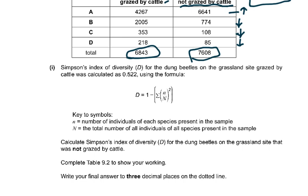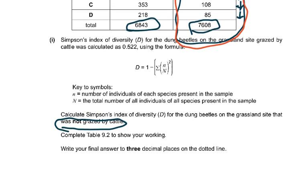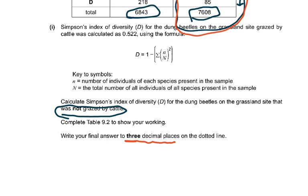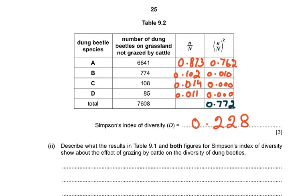Simpson's index of diversity for the grazed grassland was calculated at 0.522 using the formula D = 1 − Σ(n/N)². Calculate the Simpson's index for the ungrazed grassland, showing your working and giving the answer to three decimal places. Using each species' n over total N, squaring and summing, the answer comes to 0.772.